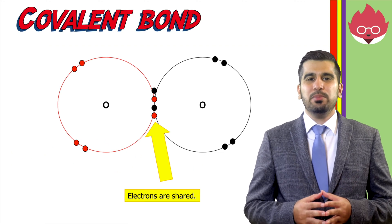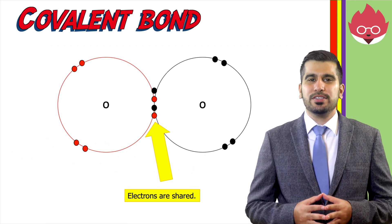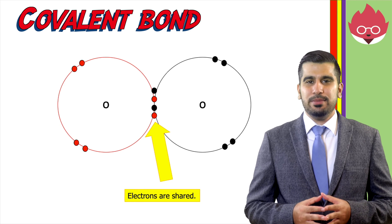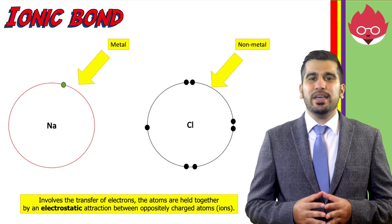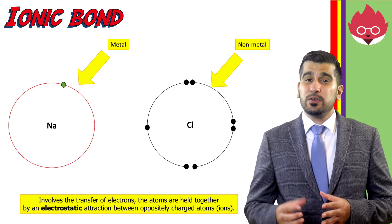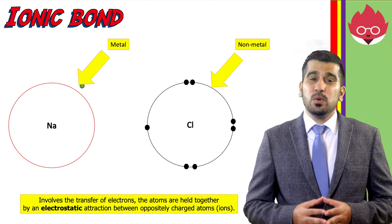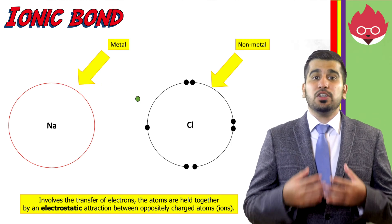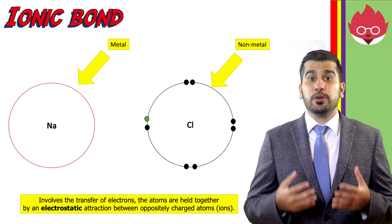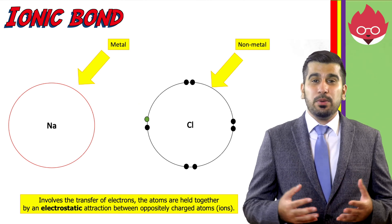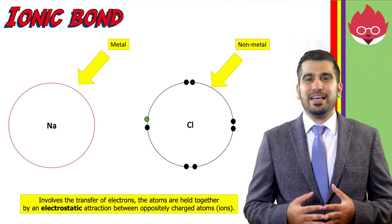For question 1, a covalent bond involves the sharing of electrons and forms between non-metal elements. For question 2, in ionic bonding, electrons are not shared but are transferred. This causes atoms to gain charges. The charged atoms are held in an electrostatic attraction. These bonds are formed between metals and non-metals.